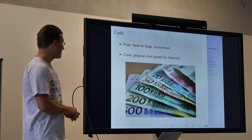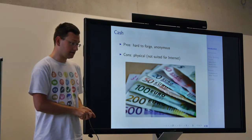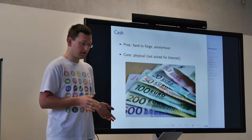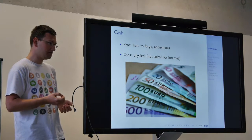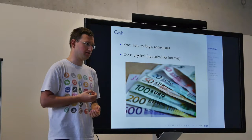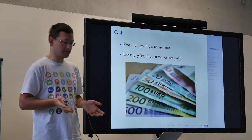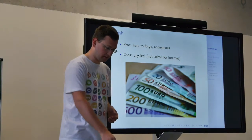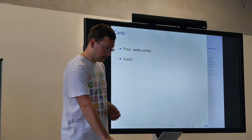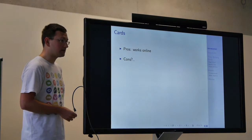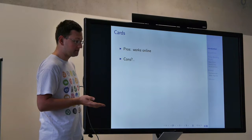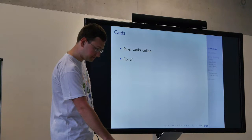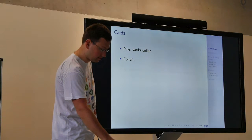Looking at cash: it has some advantages and disadvantages. In terms of cryptography, it's hard to forge paper notes, and it's more or less anonymous, despite banknotes having serial numbers you can check. But cash is physical and not suited for the internet — you can't transfer it over the wire. We all have debit cards and can pay online, so the main pro of the current system is it works online. But of course we have drawbacks of the current banking systems.